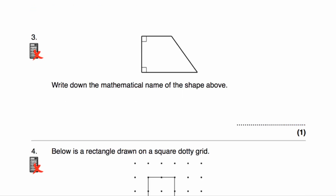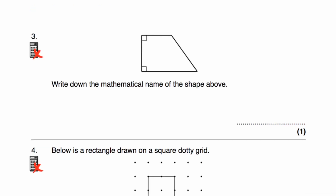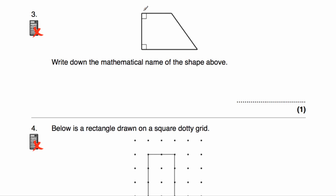Question number three. We've been given a shape with two right angles and one pair of parallel lines, so it's going to be a trapezium. We've been asked to write down the mathematical name of the shape above, so it's a trapezium.